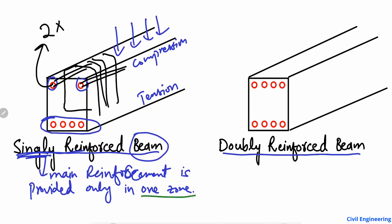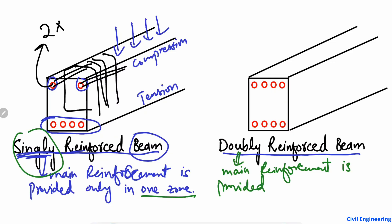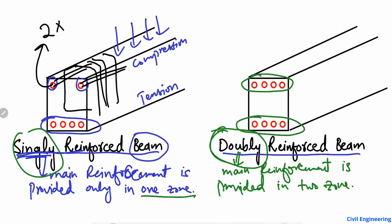When the main reinforcement is provided to resist tensile stresses in only a single zone, we call it a singly reinforced beam. But when the main reinforcement is provided in both zones — tension and compression — we call it a doubly reinforced beam. You can see from its name: it is a doubly reinforced section, so you always have reinforcement in both the top (compression) zone and the bottom (tension) zone.